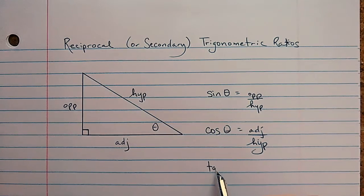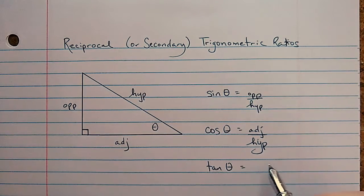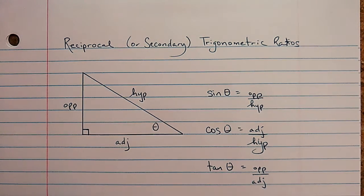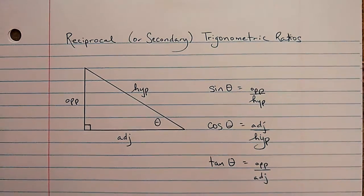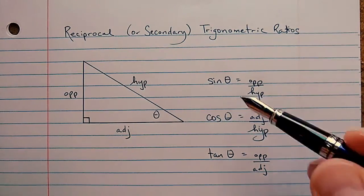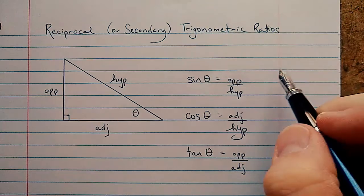And last we have the tangent ratio. Tan theta is the opposite side length divided by the adjacent side length. So we've used those quite a bit, and I'm going to show you three more that go along with these ones. I'm just going to write them off to the side here.